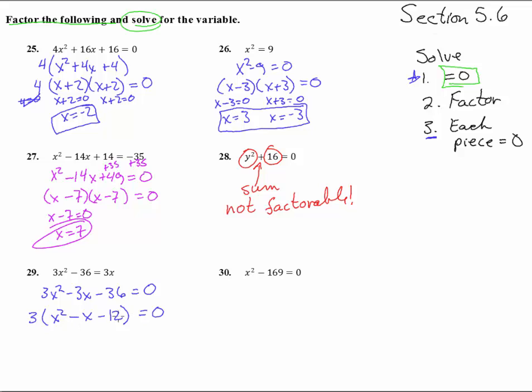Now this is a trinomial with leading coefficient one. That's nice, that's a good quick one. x and x. Now we got to think what times to negative 12, let's write it out here, that adds to negative 1. Well 1 and 12, that'll be like negative 11 or something. 2 and 6, that would do like negative 4.